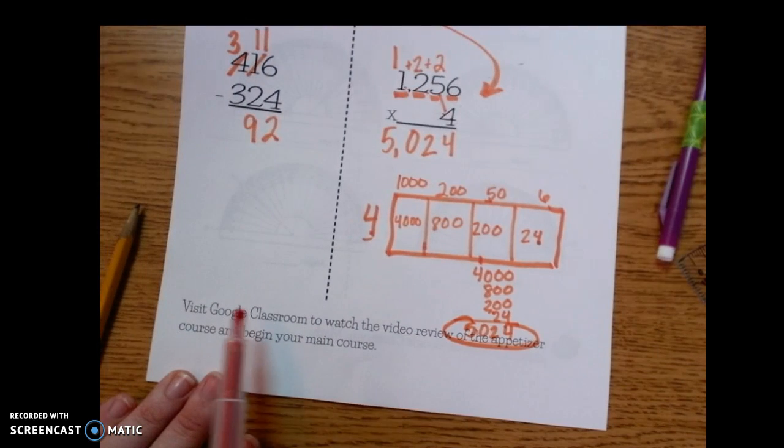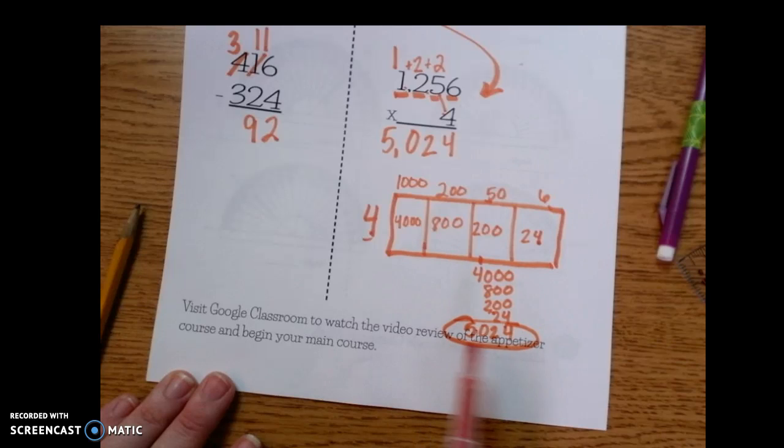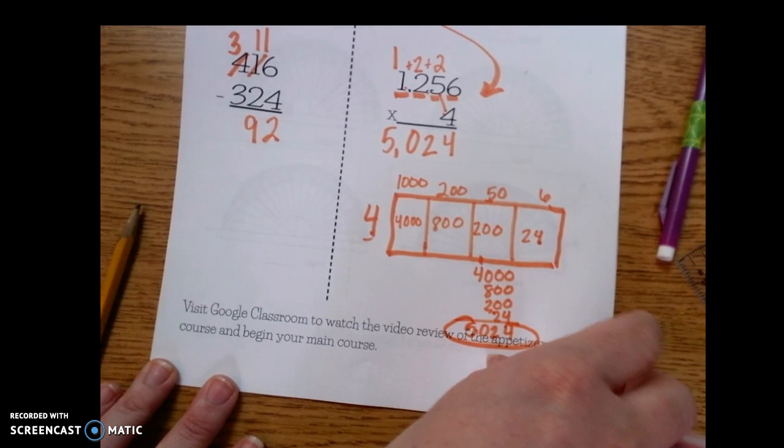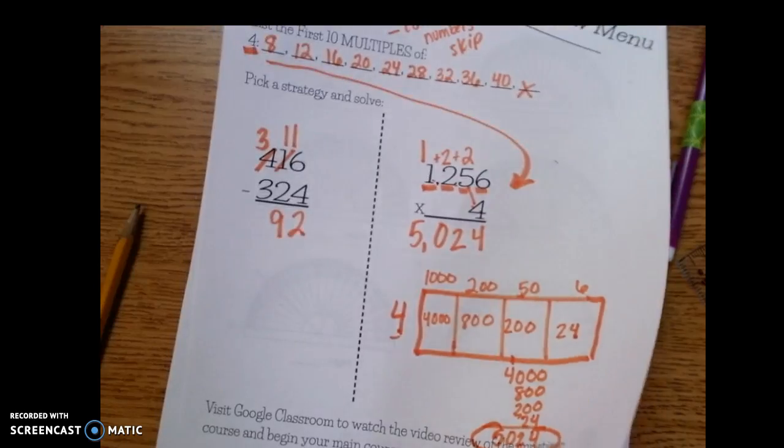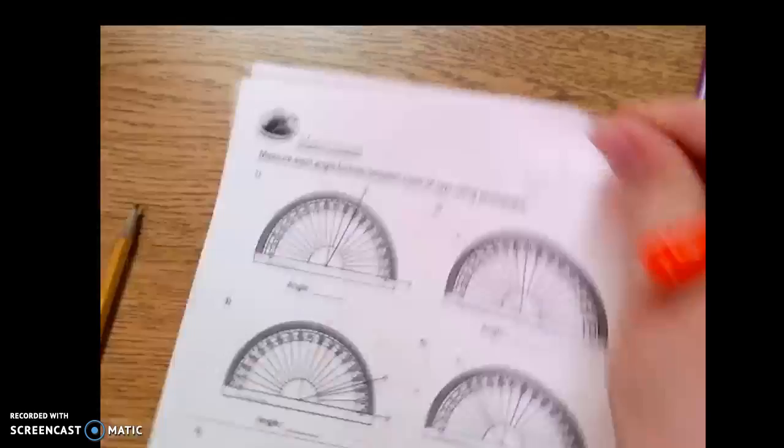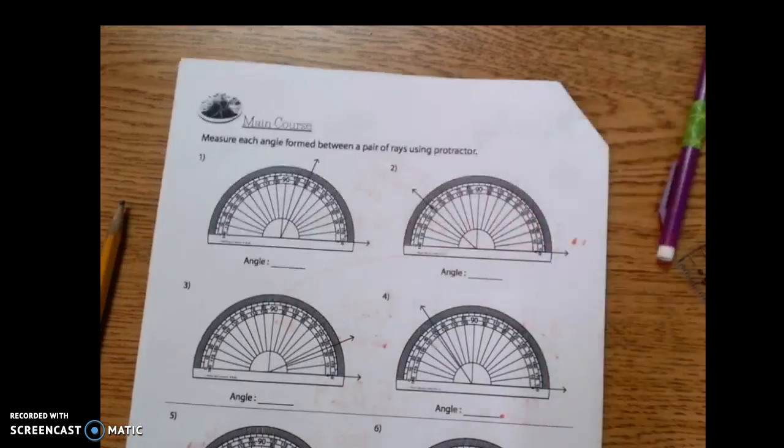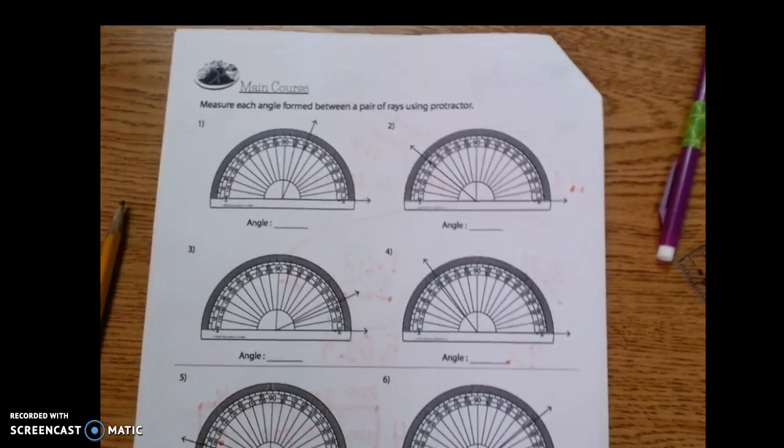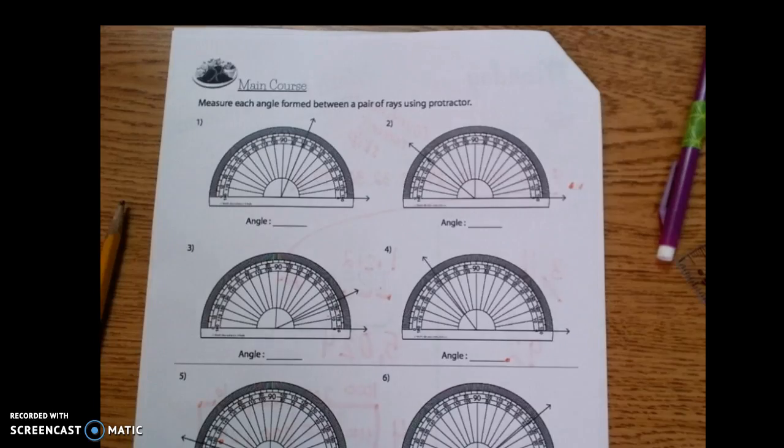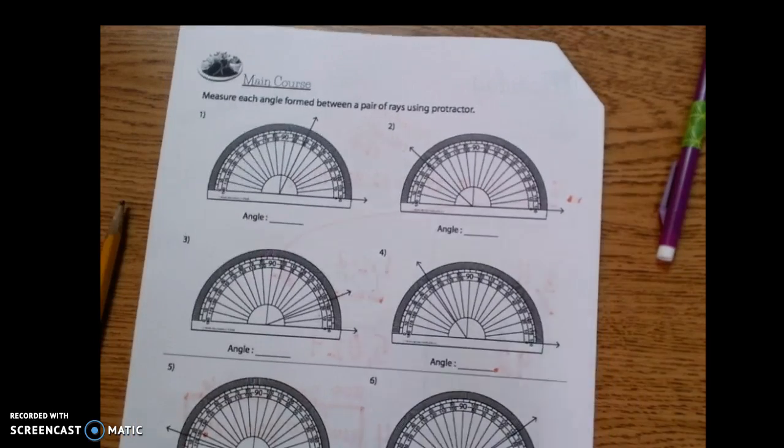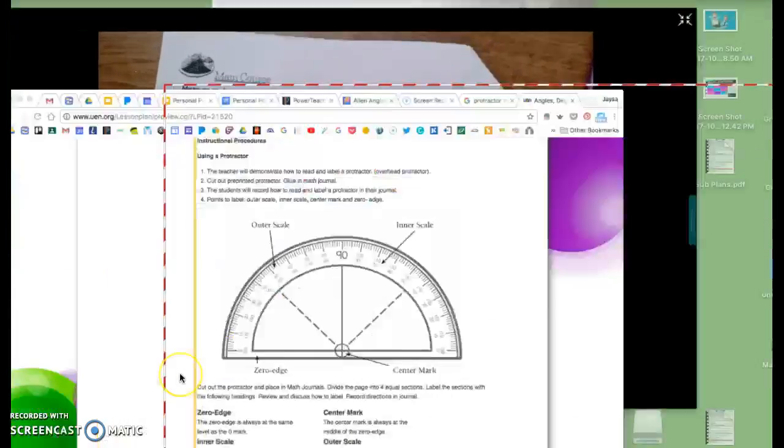Now it says to visit Google Classroom and watch the video review of the appetizer. So you're already doing that right now. So we are going to move on to the main course, which is we're coming back to measuring angles. We touched on this barely at the beginning of the year. Fourth graders, what I want to show you is just some vocabulary.